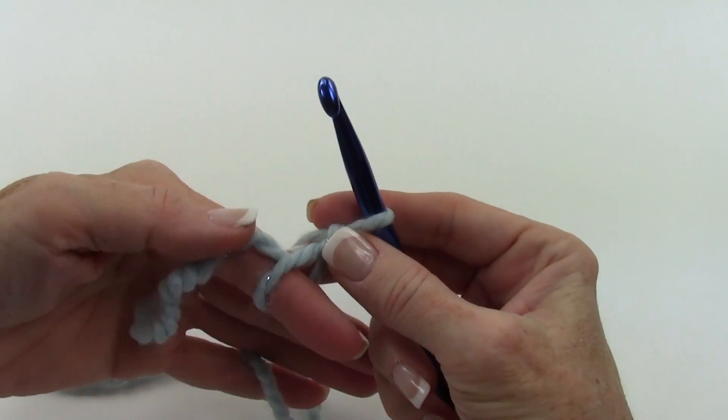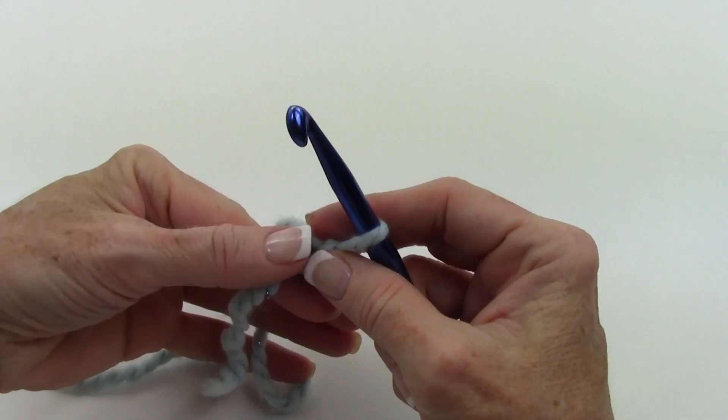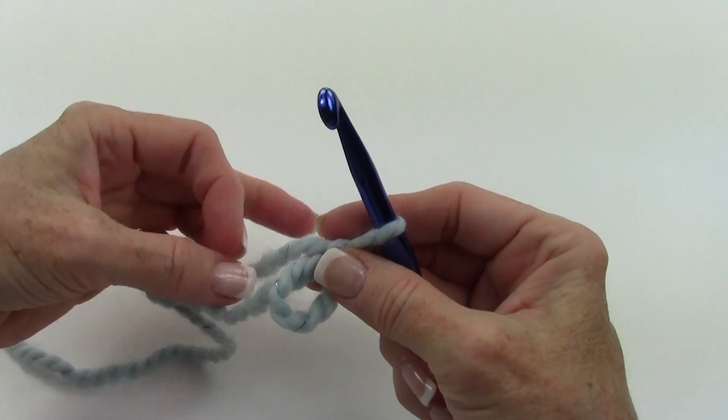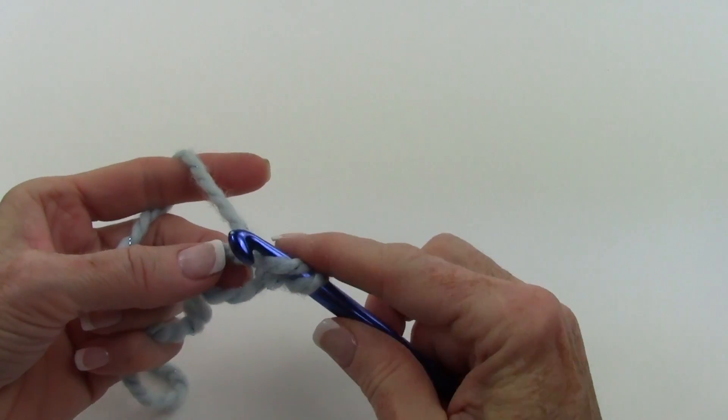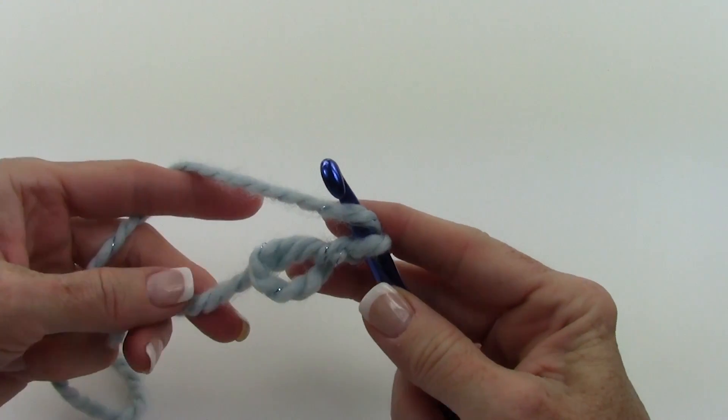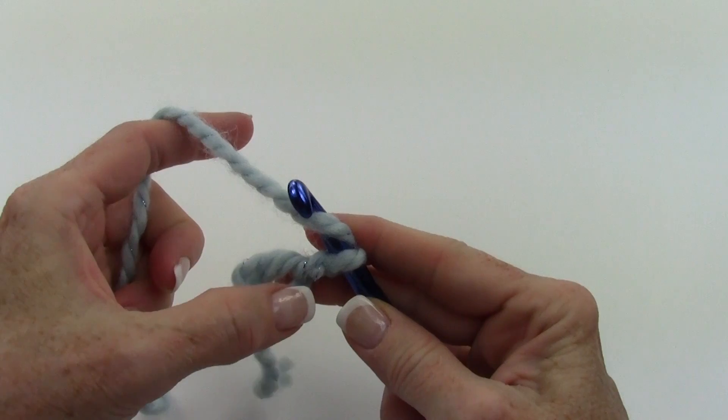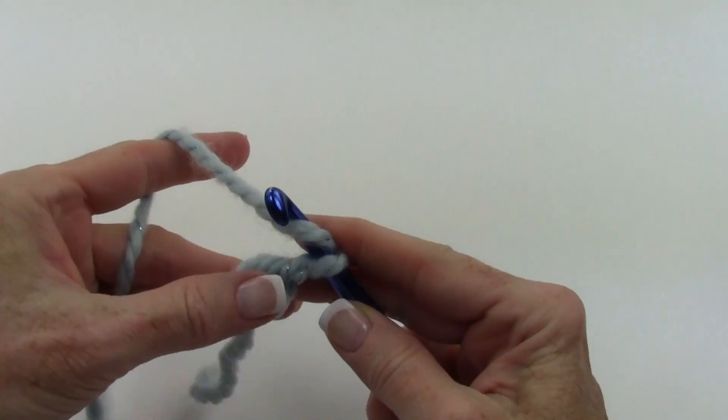And at this point, I can take it off of my finger and then work into this ring I just created. So I'm just going to work, let's say, nine half double crochets into the ring. So I'll be working into this ring and over the strand here.